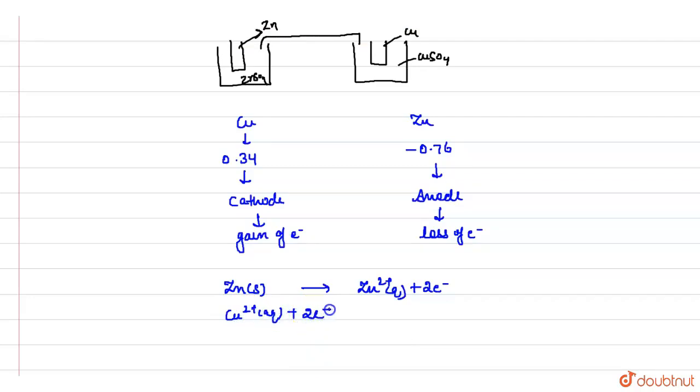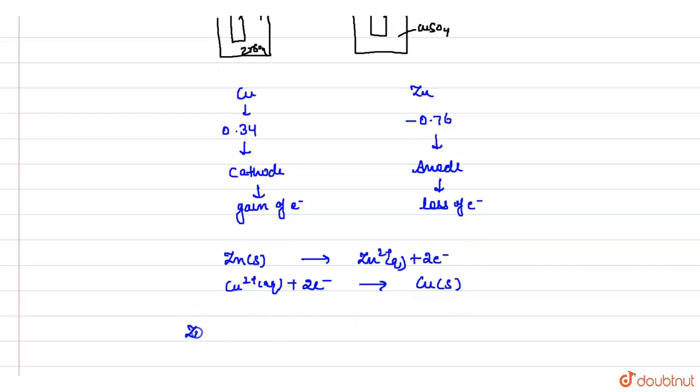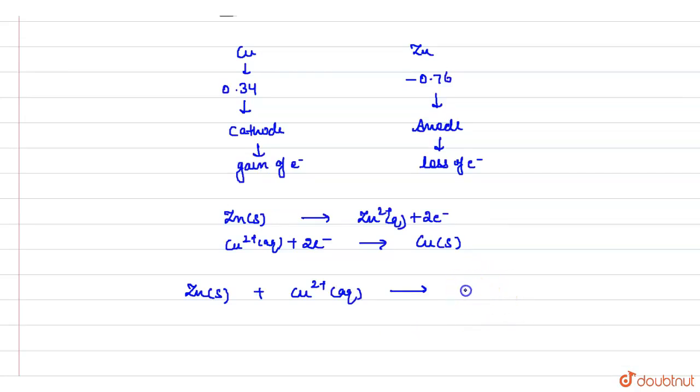Thus the overall reaction is: zinc in solid form plus copper in its aqueous form changes into Zn²⁺ aqueous plus copper in solid form. This is the answer of the first part, which is what is the cell reaction.